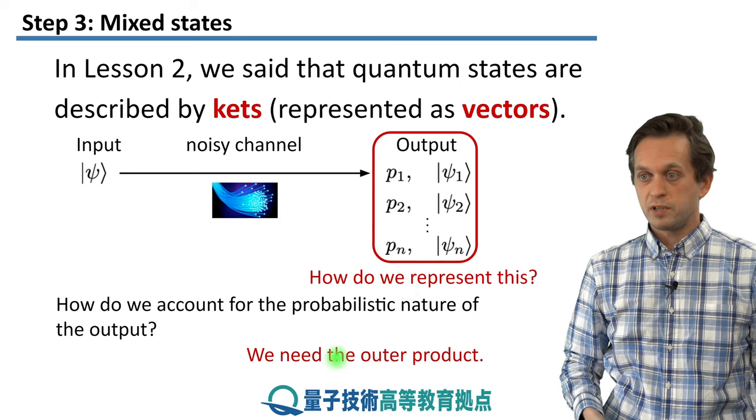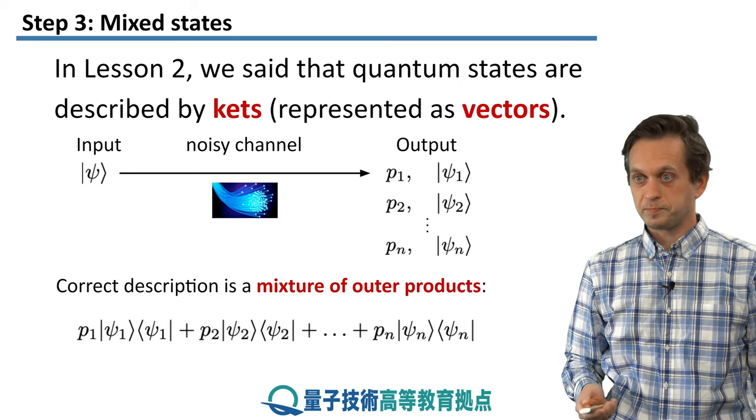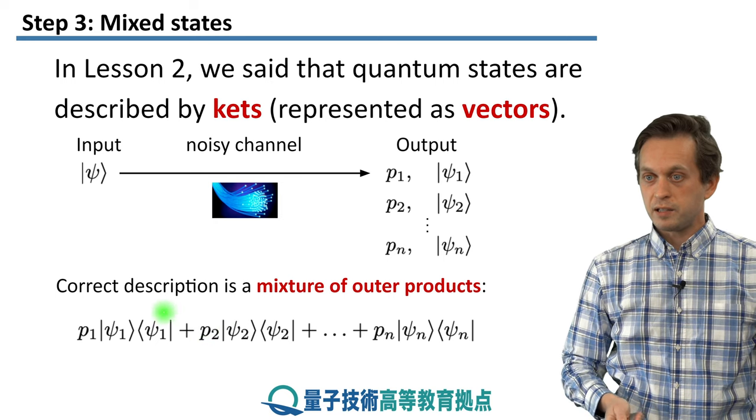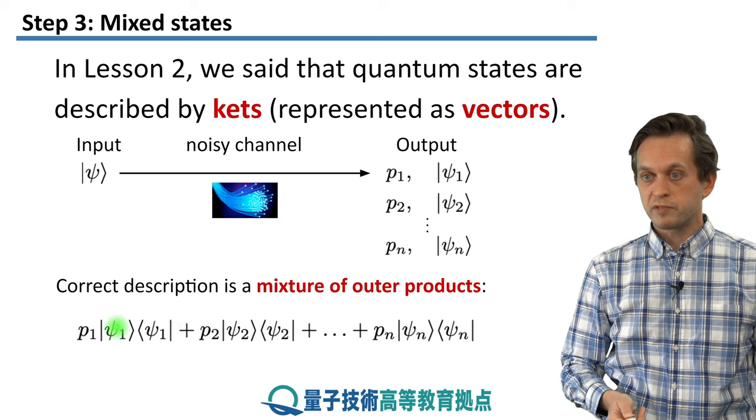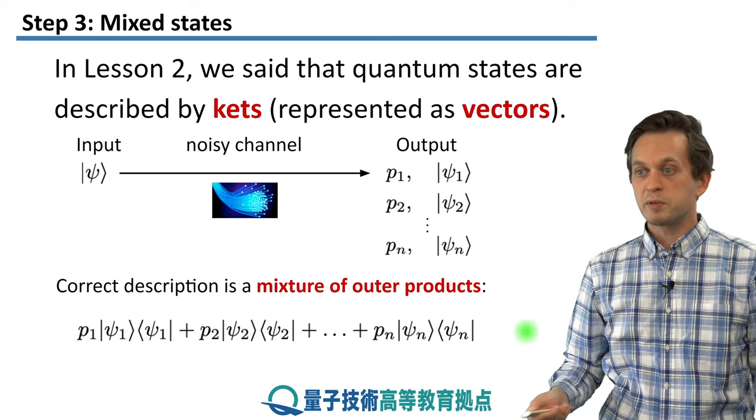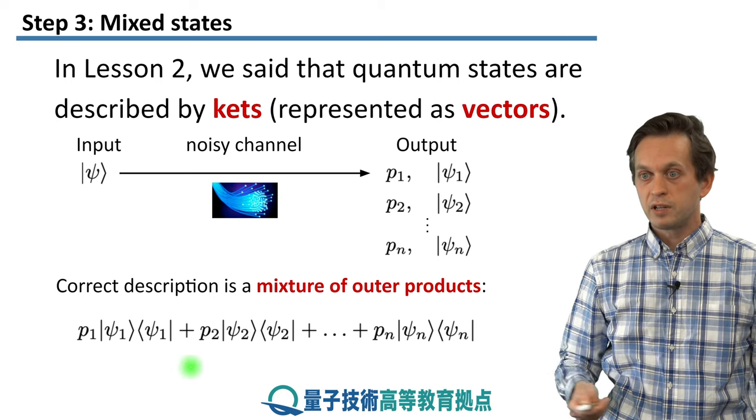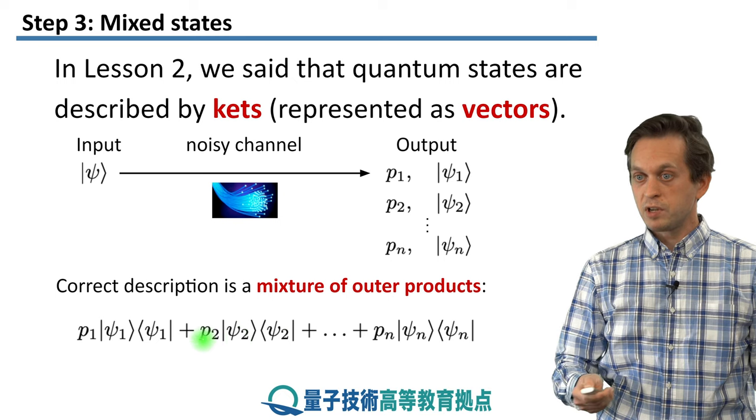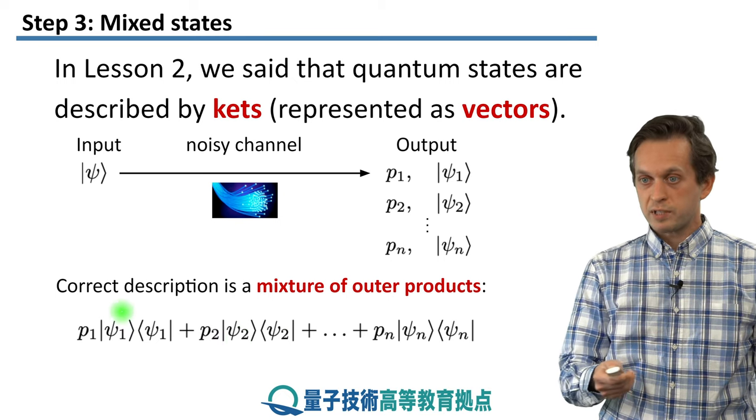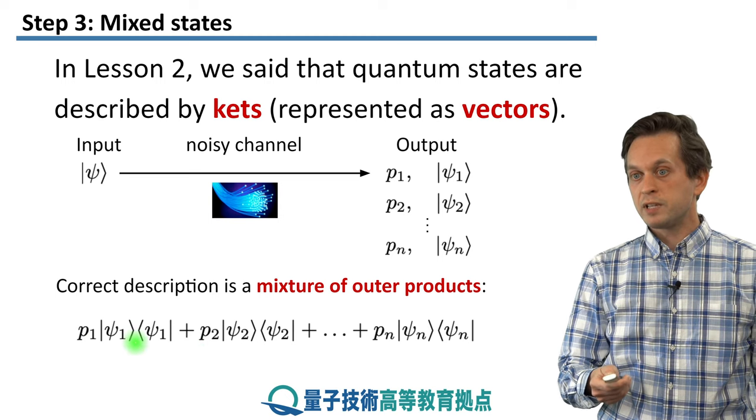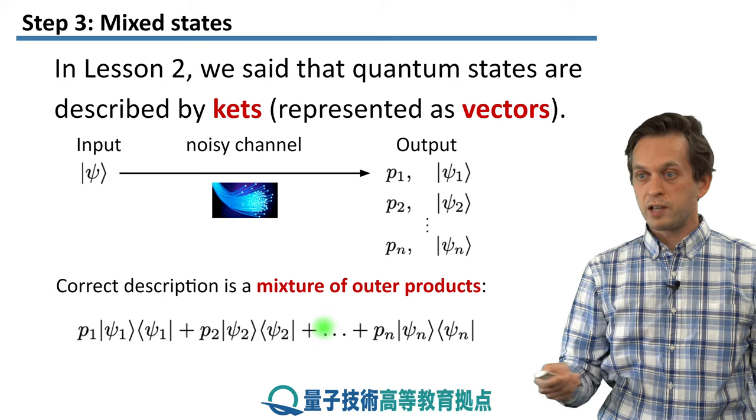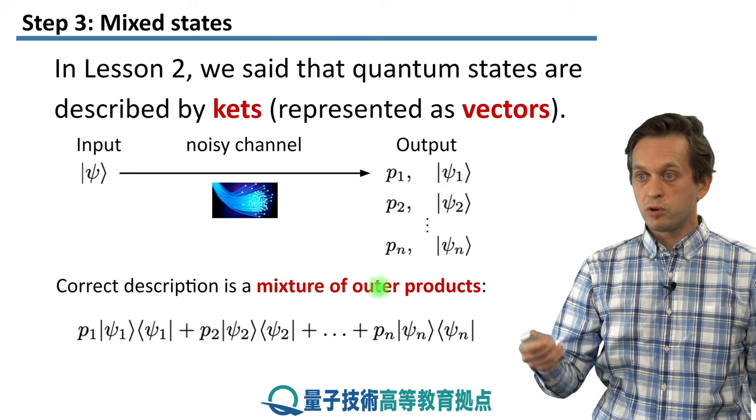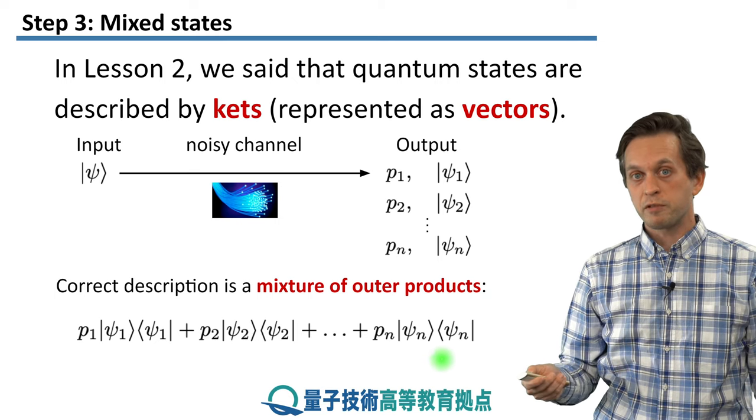So how do we do it? That's why we talked about the outer product in the previous step. And we do it with the outer product. Let's see how it works. Instead of writing it as a superposition, we write it as a mixture of outer products. So we said that the pure state psi 1 can be actually represented in the matrix form as the outer product of psi 1 with itself. Same with psi 2 and same with psi n. So the correct description of this output here is we've got the state psi 1 weighted by probability P1, we have the state psi 2 weighted by probability P2 and so on.